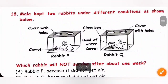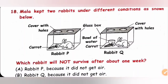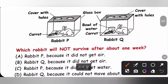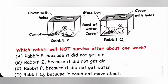Question 18: Mala kept two rabbits under different conditions. Rabbit P has a covered container with holes so it gets air, and has food but no water. Rabbit Q also has a container with holes so it gets air, has food and a bowl of water. Both rabbits get air and food, but only rabbit Q has water. Rabbit P will not survive after about one week because it did not get water. Option C is the correct answer.